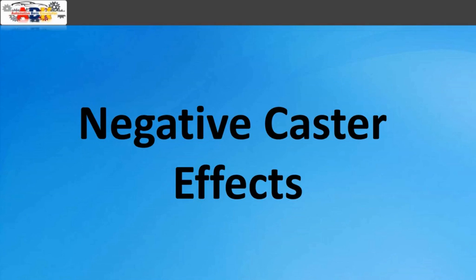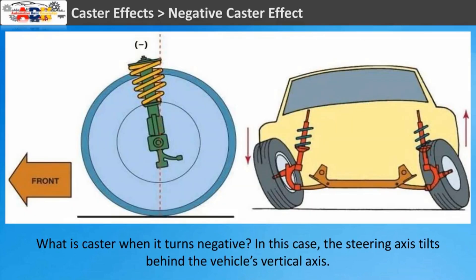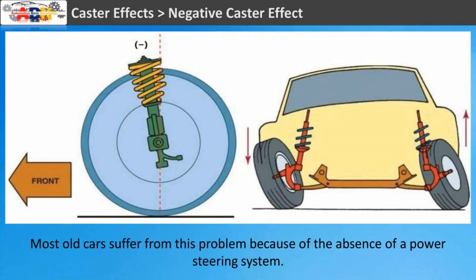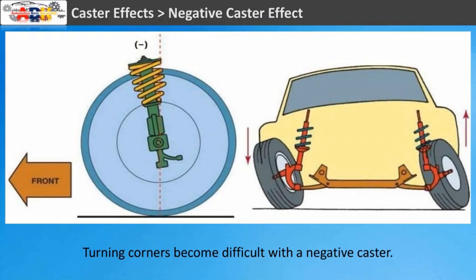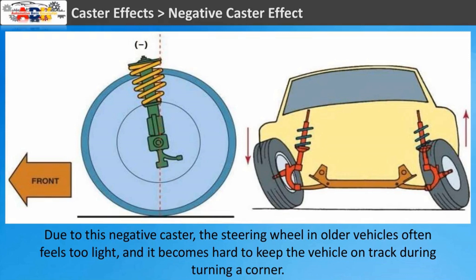Negative caster effect: When caster turns negative, the steering axis tilts behind the vehicle's vertical axis. Most older cars had this problem due to the absence of a power steering system — setting a negative caster was the only way to make steering wheel rotation easier. Turning corners becomes difficult with a negative caster. The steering wheel in older vehicles often feels too light, making it hard to keep the vehicle on track when cornering.